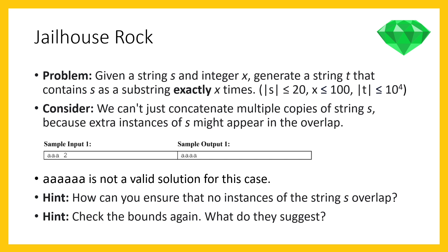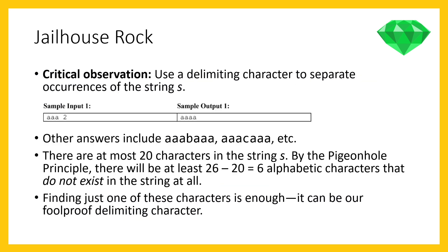The hint is: how can you ensure that no instances of string s overlap? The critical observation is that we can use a delimiting character to separate occurrences. Rather than concatenating two copies of 'aaa,' we can separate each copy with another character — like 'aaa b aaa' — giving exactly two non-overlapping copies. You can use any letter except 'a' in this case, or more generally, any character not in s.